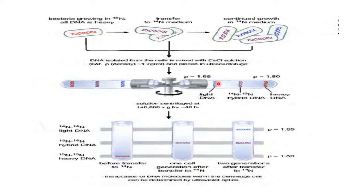The result could only be satisfied by the semi-conservative method of replication. In the second step, they got a hybrid DNA — one N14 strand and one N15 strand — and no complete N15 DNA was seen in the second generation. This indicated that one parental strand is conserved in each daughter cell. In the next generation, two bands appeared because one strand was again conserved, producing two types of DNA: one hybrid DNA and one with entirely N14 strands.